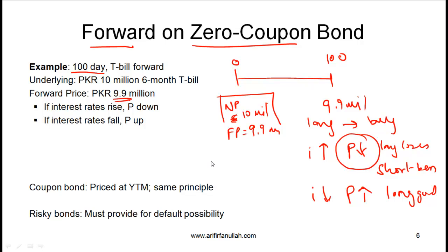We've covered zero coupon bonds, but what about coupon-paying bonds? The basic idea is the same — coupon bonds are priced based on yield to maturity, and the same principle holds: if interest rates go down, the long party benefits because the underlying price rises. For bonds that carry credit risk, such as triple-B rated corporate bonds, the contract needs to specify what will happen in case the issuer defaults. All you need to know is that for risky bonds, the contract must account for the possibility of default.